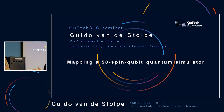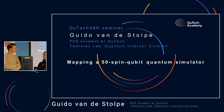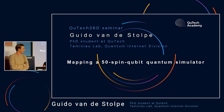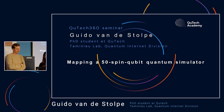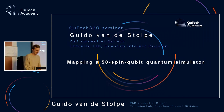Today I have the pleasure to introduce Guido van de Stolpe. Guido has a master in experimental physics with a specialization in quantum matter and optics, and now he works on material defect spin systems with applications in quantum sensing and networks.